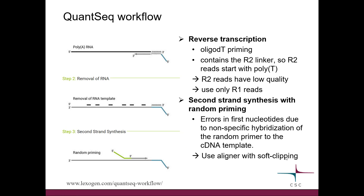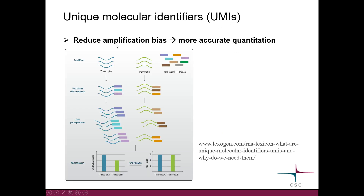We need to use an aligner that can do soft clipping, such as STAR or HiSAT2. Soft clipping means that the aligner is able to ignore mismatches at the ends of the read. Unique molecular identifiers are used to reduce amplification bias in order to get more accurate quantitation.